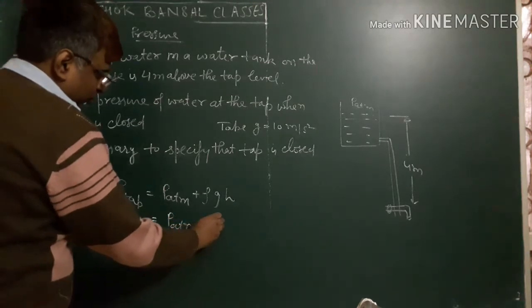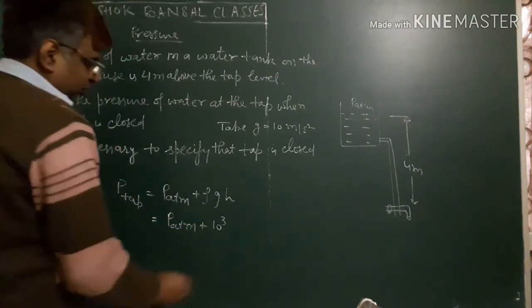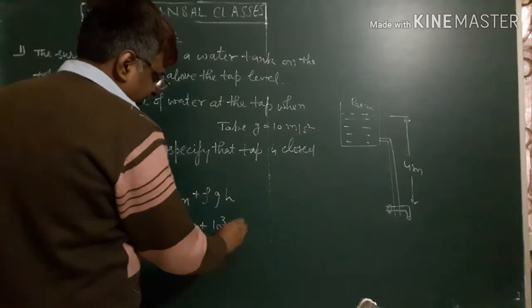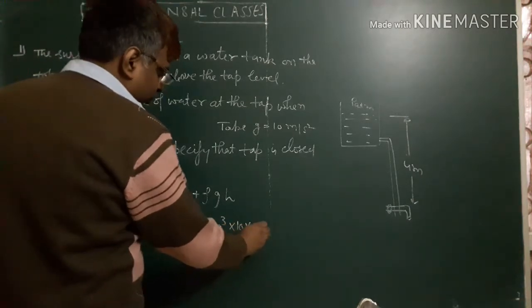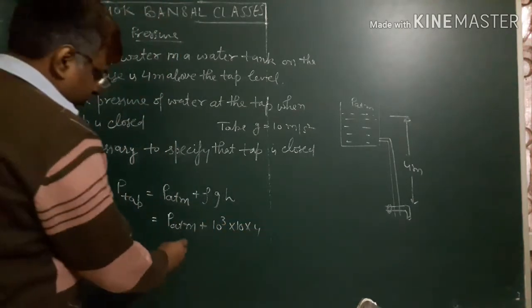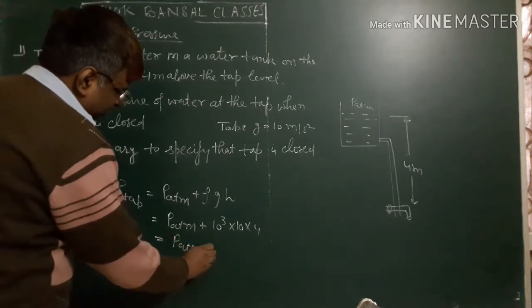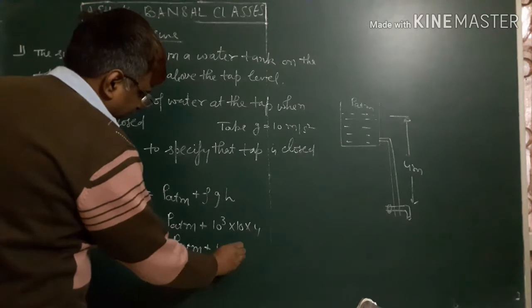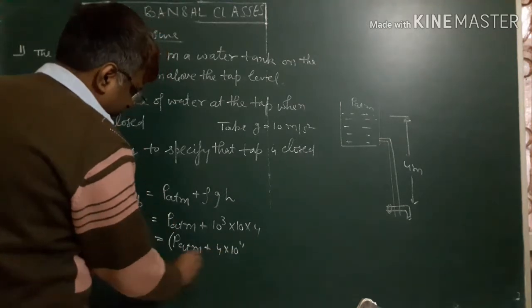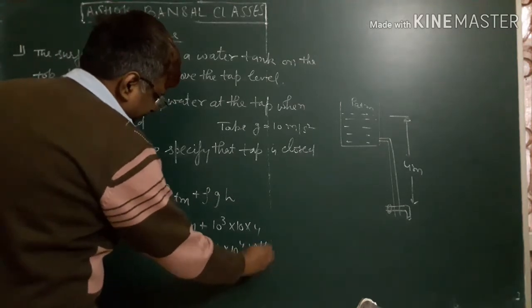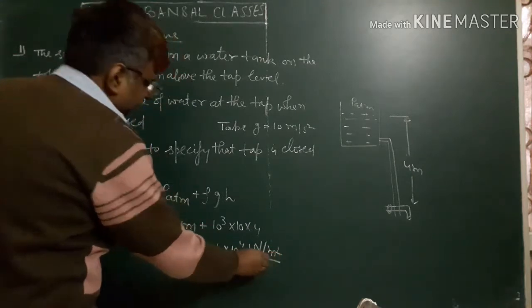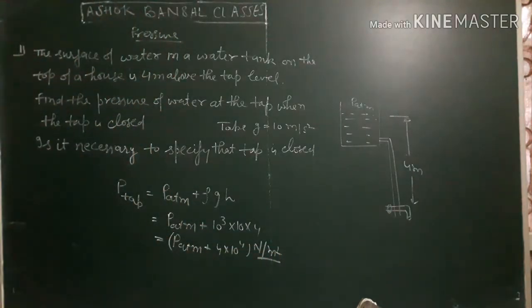Plus rho water 10 to the power 3, g is 10, h is 4 meters. That gives 4 times 10 to the power 4 newtons per meter squared. Now this question's answer: